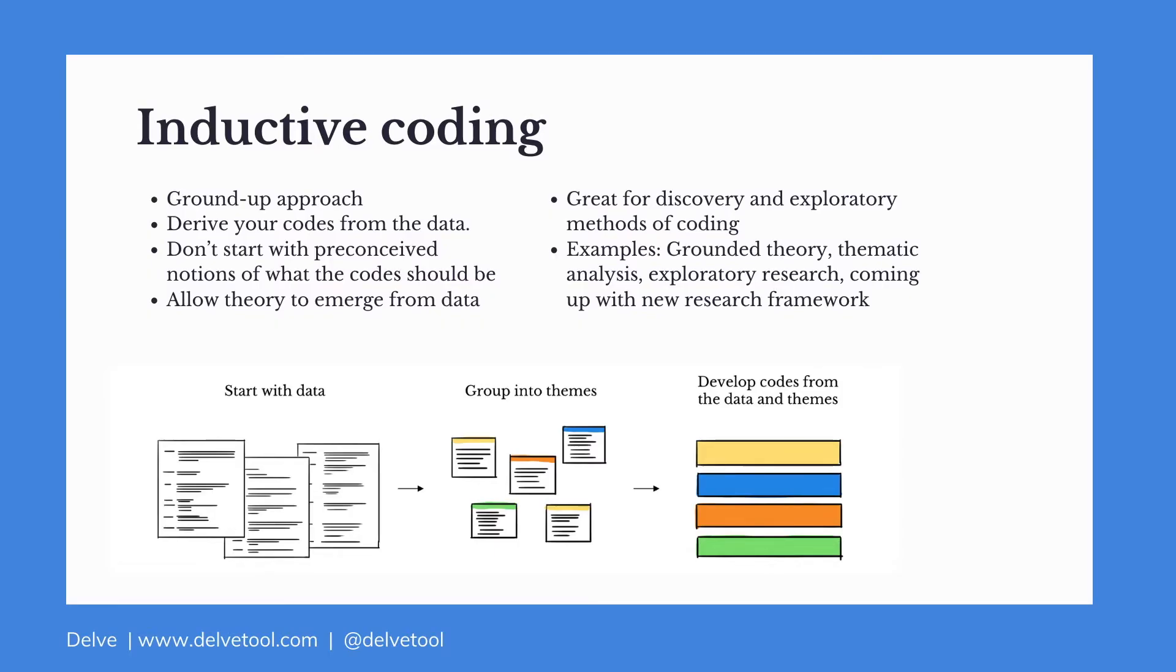A different approach is inductive coding, and this is a ground-up approach. So rather than starting with a set of codes, you start by looking at your data. And then based off of what you're seeing in your data, that's when you derive the types of codes that will be appropriate for your data.